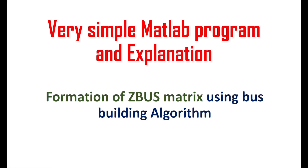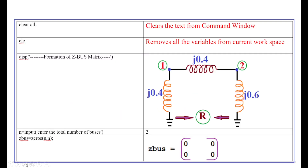Hi everyone, in this video I am going to explain a very simple MATLAB program for automation of the ZBUS matrix using the bus building algorithm. Before starting any program, first of all we have to add two lines: clear all and clc. Clear all clears the text from the command window, and clc removes all variables from the current workspace. Then we have to put a title for the program — this is the display formation of ZBUS matrix.